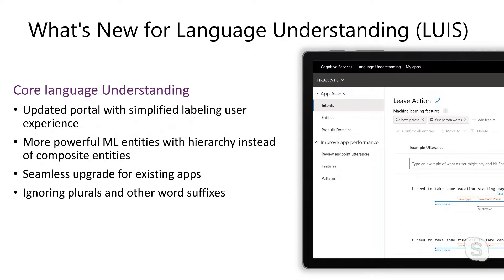We've got one more new thing in core language understanding — a new app setting called Normalize Word Form. By default, LUIS treats root words differently than their plurals or roots that have suffixes. But in some cases, you want the plurals and suffixes to be handled the same in your application. If that is applicable, you can just turn this new setting on and they'll all be handled for you automatically.